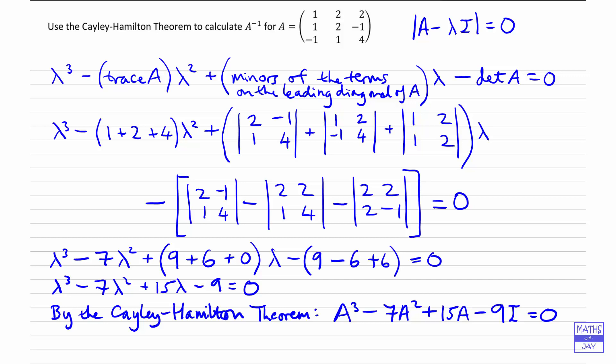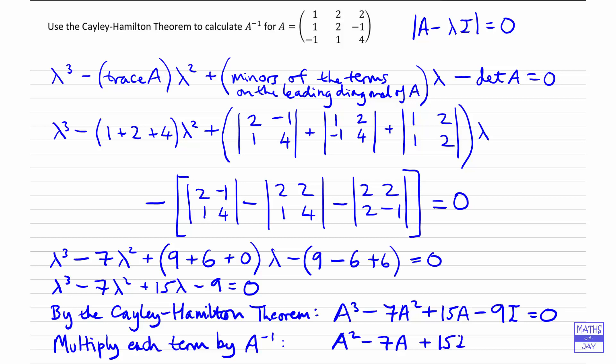We're trying to use this to calculate the inverse of matrix A. There isn't any inverse in this equation, but we can make one appear if we multiply each term by A⁻¹. Each power then drops by 1: A cubed becomes A squared, A squared becomes A, A times A⁻¹ gives the identity matrix, so that's plus 15I, and 9I times A⁻¹ gives 9A⁻¹. Zero stays as zero.